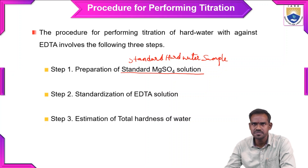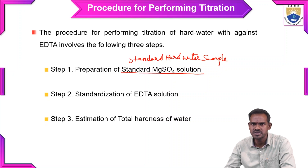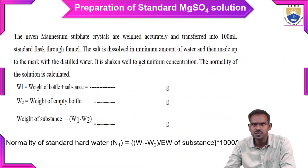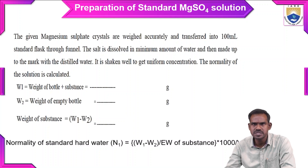We will go through the first step, then the second and third steps. After showing these three steps, I will also explain hardness of water using a numerical problem. Let us look at step 1: preparation of standard MgSO4 solution, also called preparation of standard hard water sample.